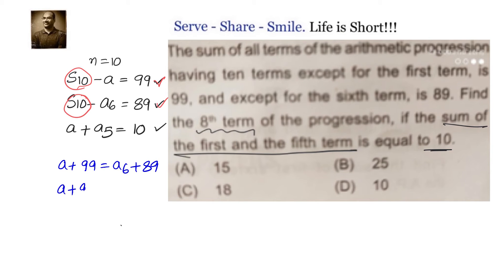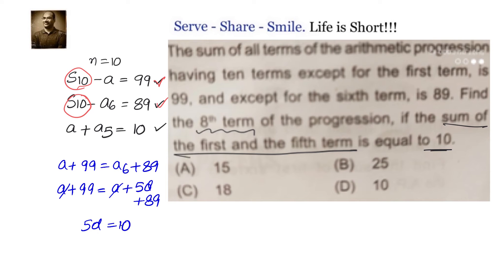So, a plus 99 equals a6, which is a plus 5d, plus 89. We can cancel a from both sides, giving us 5d equals 10. That means the common difference d equals 2.